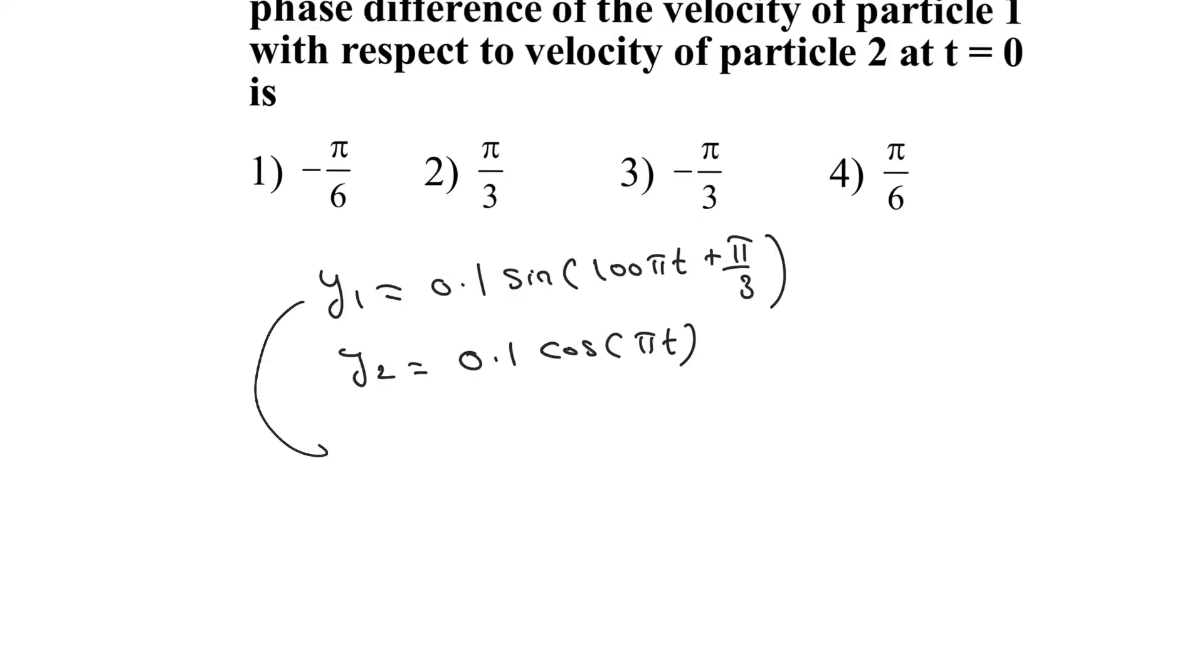Differentiating the equation for displacement, we get the velocity of the first particle. That is 0.1, and the differentiation of sin theta is cos theta, which gives cos(100πt + π/3) times 100π.